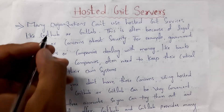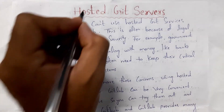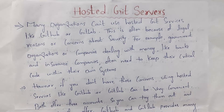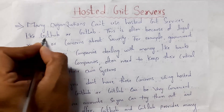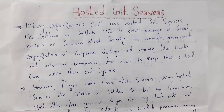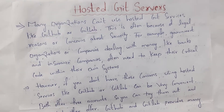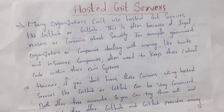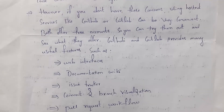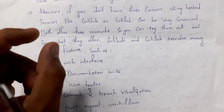GitHub and GitLab are both examples of hosted Git servers. However, many companies do not use hosted Git services like GitHub and GitLab because of legal reasons and security issues. Since GitHub and GitLab are websites on the internet, there is a high chance of hacking. For example, government organizations, banks, and insurance companies will not store their code on GitHub or GitLab because they are cloud-based and present on the internet, so they store their code on their own systems instead.